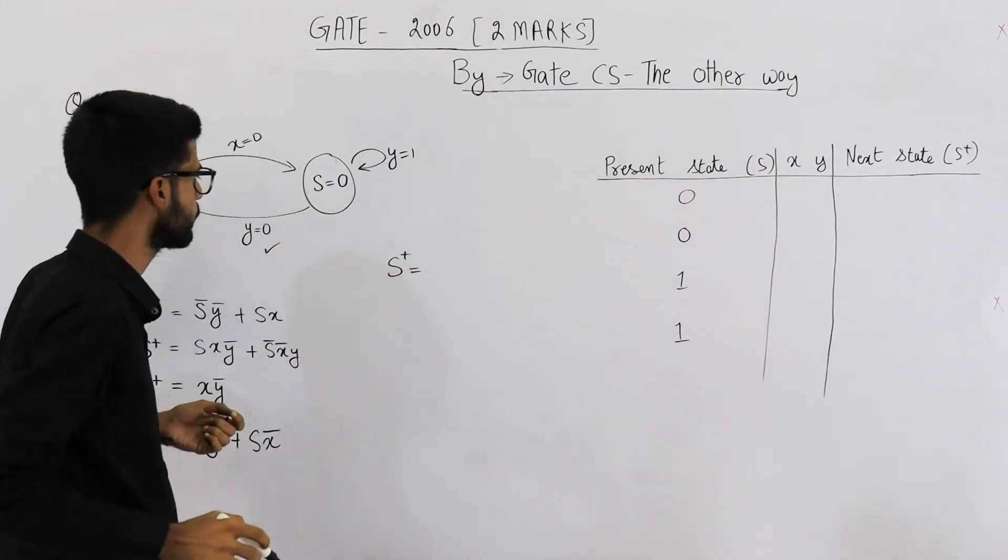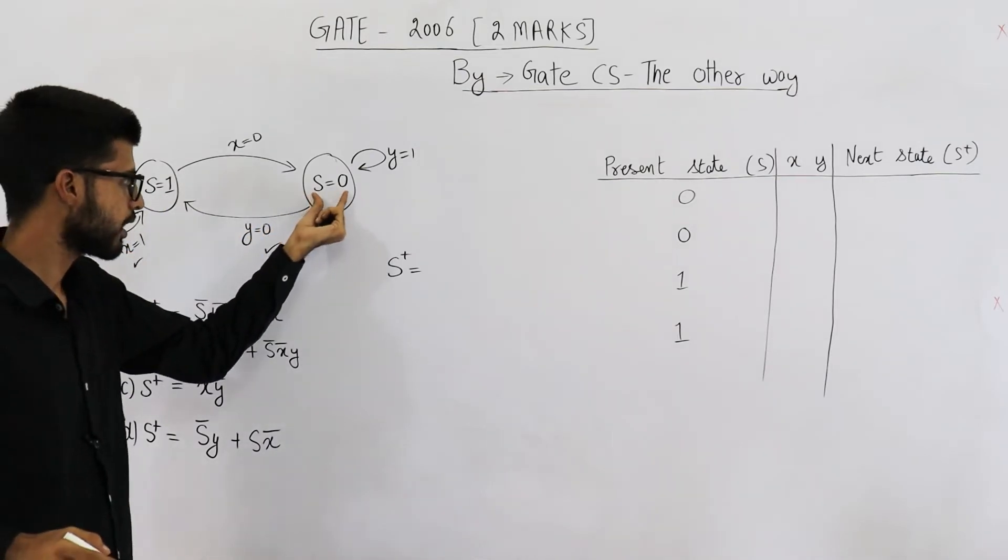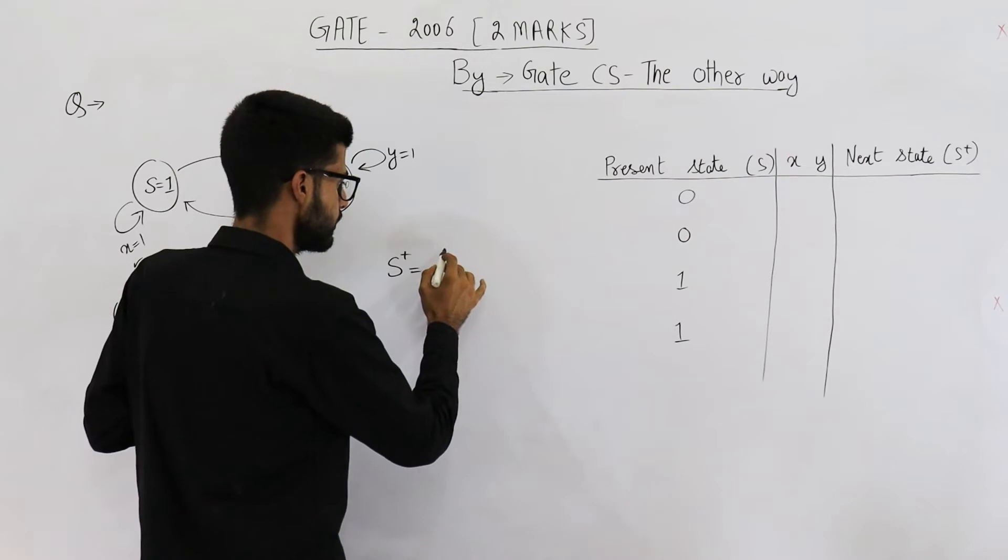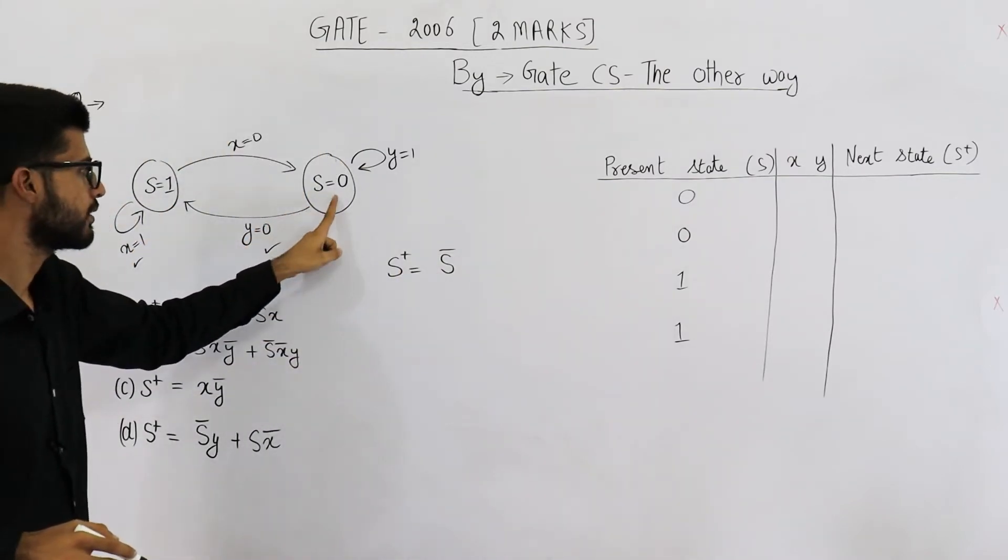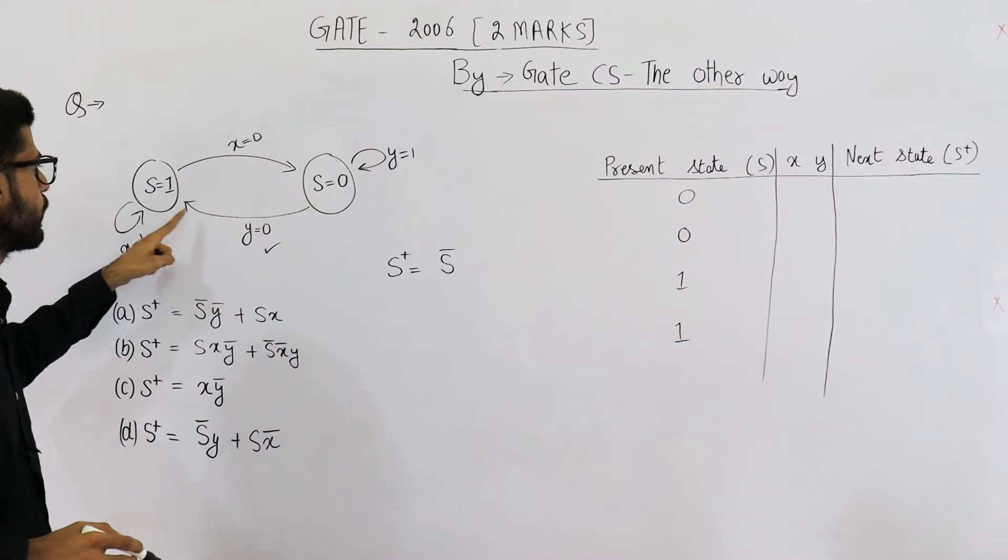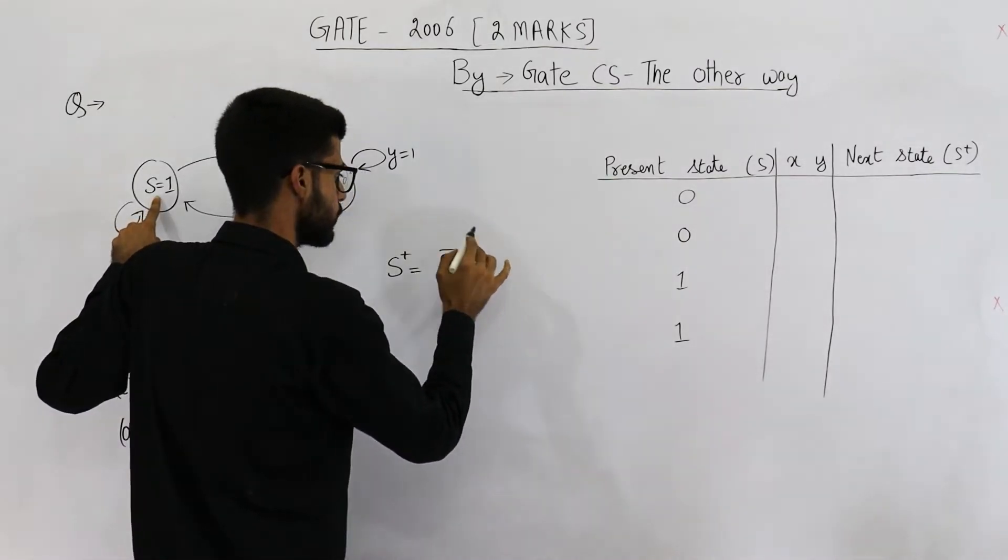s plus is equal to, first case is we are taking this transition. That means currently the state is 0. So currently state is 0 means s bar and y is also 0. On this state if we see a y will move here, y is 0 means y bar.